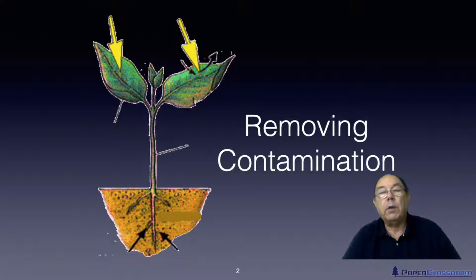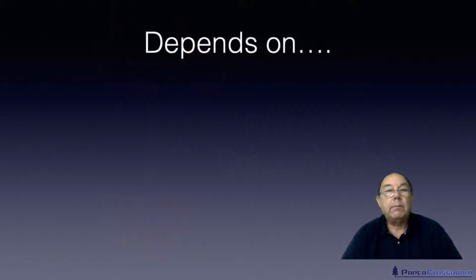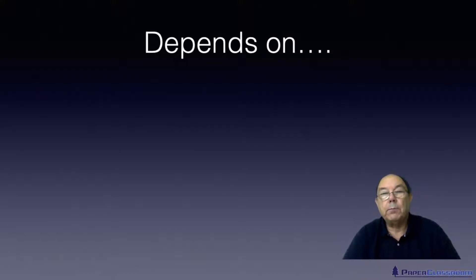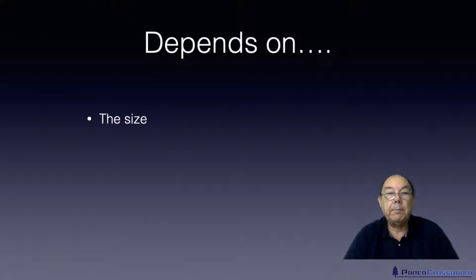This is really an overview of removing contamination. If you want to remove contamination then you really need to know what contamination you've got and how much. Whatever equipment you specify depends on the size of the contamination, because it could be anything from a car engine to an ink particle, a grain of sand, or a coin. It depends on the type of contamination.